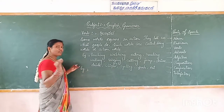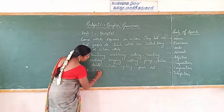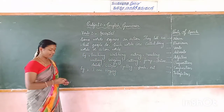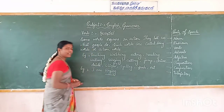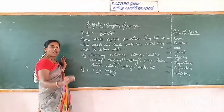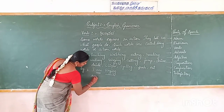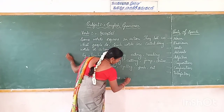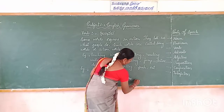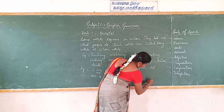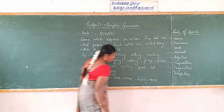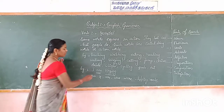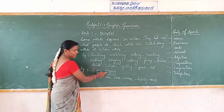For example, I have one sentence: I am singing. Dear student, which is the verb in this sentence? Singing — it is a verb. But 'am' is also a helping verb. So am, is, are, was, were — these are called helping verbs. And singing, reading, writing, teaching, watching — these are called main verbs. In this sentence 'am' is a helping verb and 'singing' is a main verb.